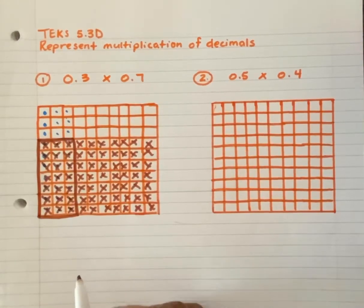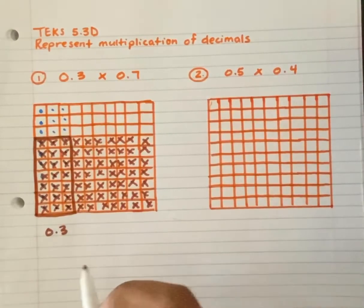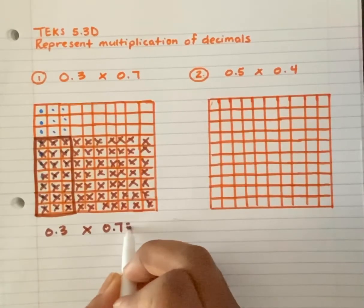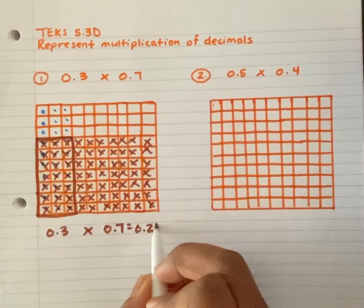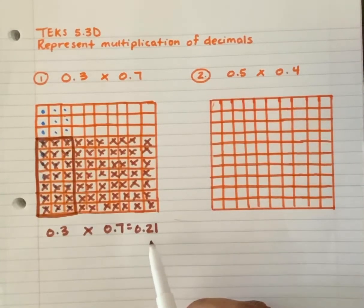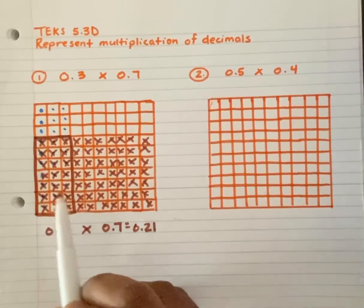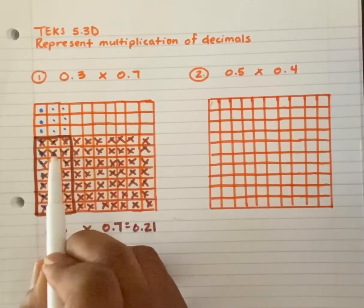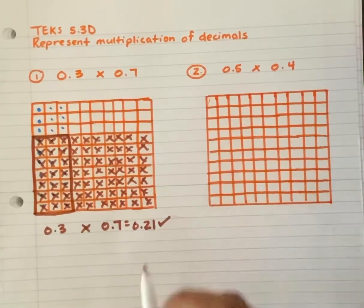So let's write our final answer. Counting the intersection again: 21. This is my answer — 21 hundredths.